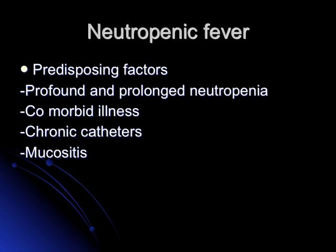Predisposing factors for neutropenic fever include profound and prolonged neutropenia, comorbidities, chronic catheters, and mucositis — which sounds like most of our patients at Moffitt. Here at the VA, most neutropenic patients are low risk, meaning they recover counts within a week or two. High-risk neutropenia refers to patients who will be neutropenic for more than two weeks, such as those on induction chemotherapy.